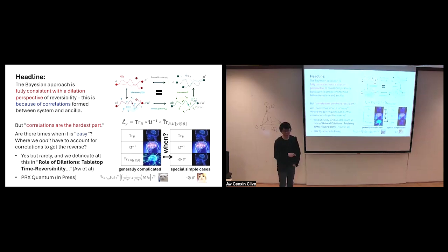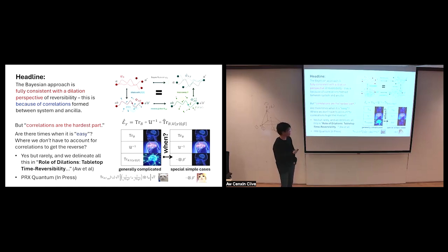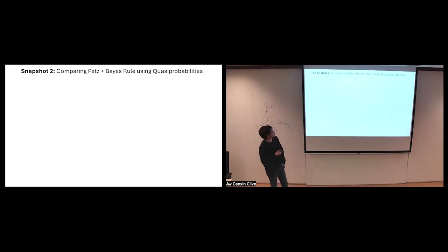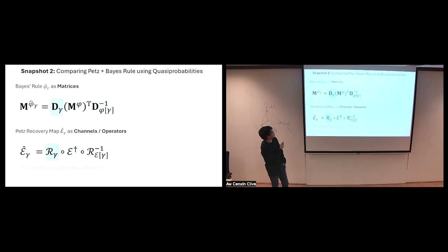The paper on this is currently in press - hopefully it comes out soon. The next snapshot has to do with the relationship between the PETS map and Bayes' rule. Recall that structurally there are a lot of similarities between Bayesian inversion and the PETS recovery map. But one might object: these are stochastic matrices in a probabilistic space, while the quantum objects are channels and operators in a Hilbert space - you're comparing apples to oranges.